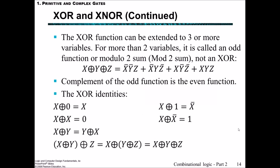The XOR and the XNOR function can actually be extended to three or more variables. For more than two variables, we call it the odd function or modulo 2 sum, mod 2 sum, not XOR. And that would be the case for this example here: X XOR Y XOR Z, which expanded out looks like this. You can keep in mind that the complement of an odd function is the even function. The XOR identities are like this: X XOR 0 is equal to X, X XOR X is equal to 0, X XOR 1 is equal to NOT X, X XOR NOT X is equal to 1. The order that they put in doesn't matter. So it can be like this. We can also group it in this way using the brackets, and all of these three are equal to each other.